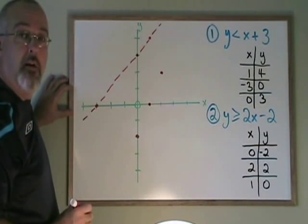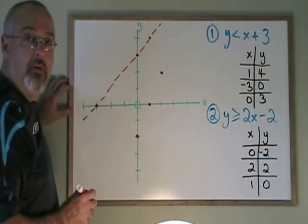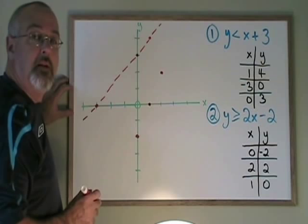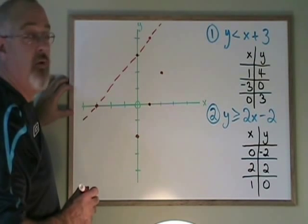Now it's time to draw my line. This time, I have greater than or equal to. Because it also includes or equal to, it means the points on the line are part of the answer. And I express that by drawing a solid line.